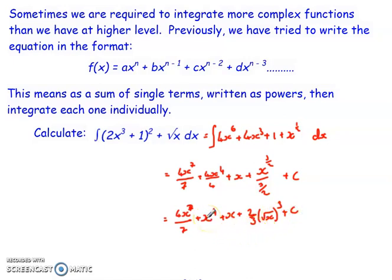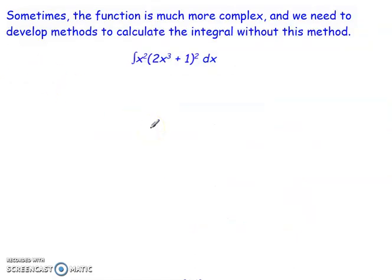So there we go: multiplied out the brackets, wrote each thing individually, and then integrated term by term. However, they're not always that simple and straightforward. Let's imagine we have something written in a slightly more complex format, and we're looking to develop a way to integrate it without having to multiply out the bracket. What we're going to do is look at using a substitution and writing it in terms of a different variable in order to be able to do that.